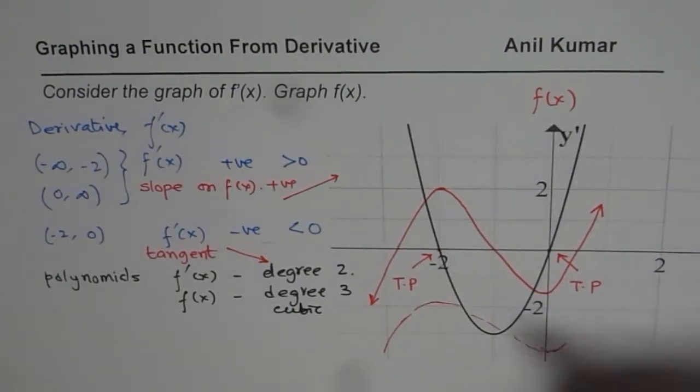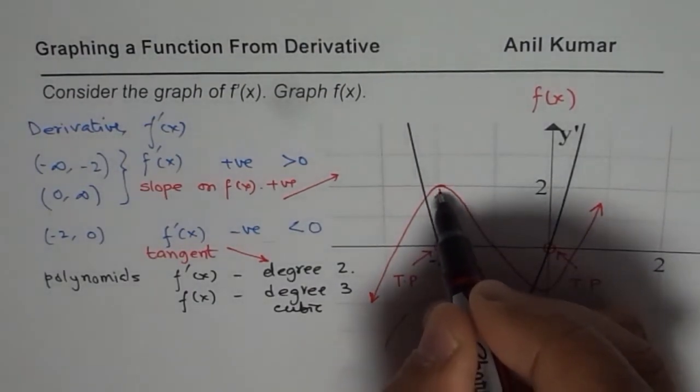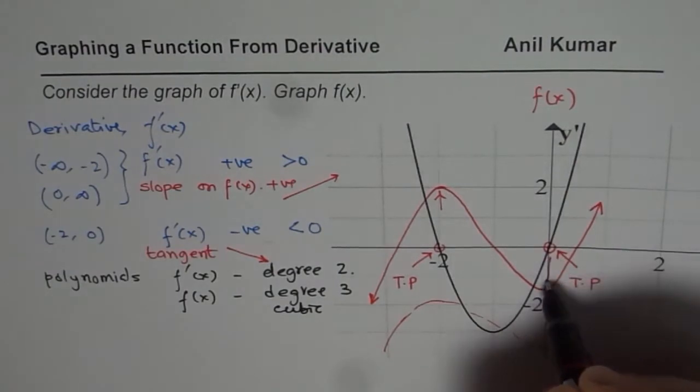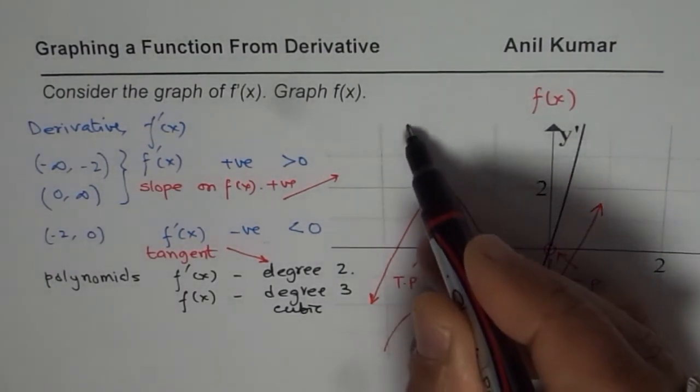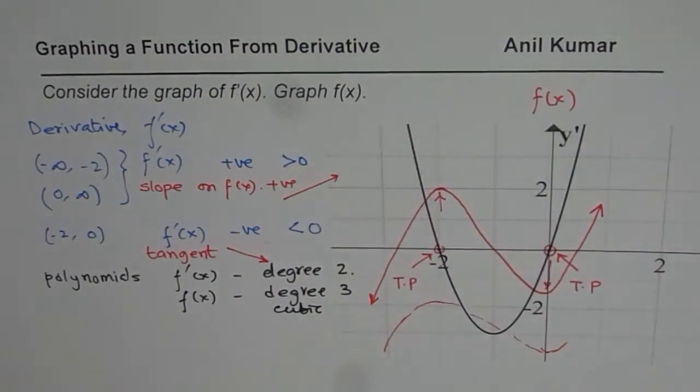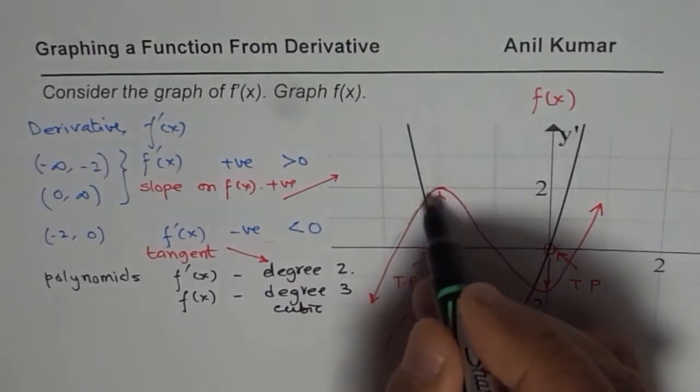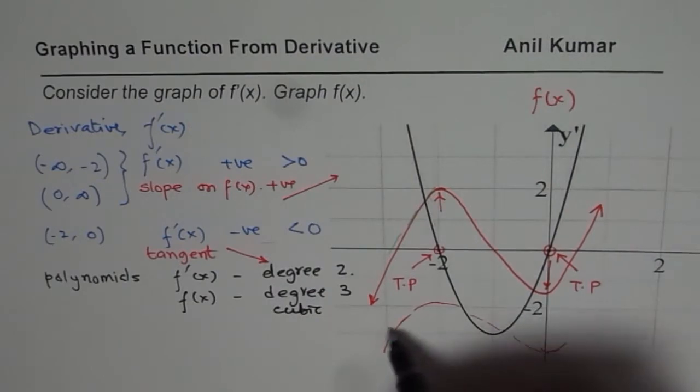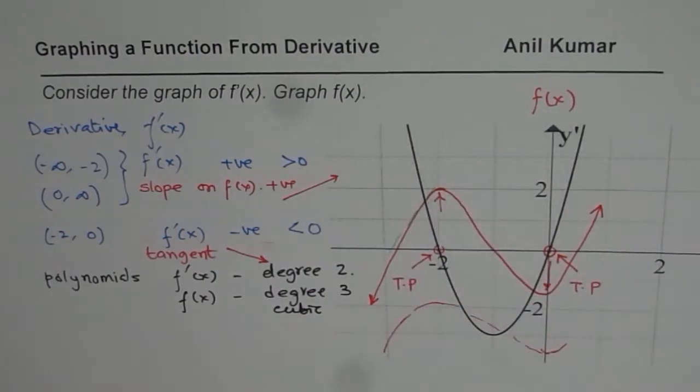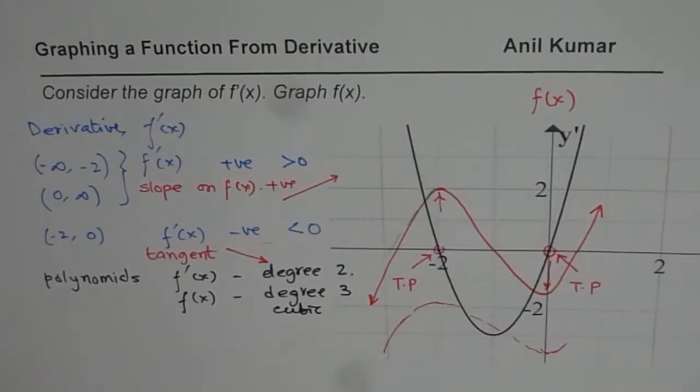So that is the cubic function which we have drawn, which could be the function whose derivative is given to us. The idea here is to match these turning points. If I draw any tangent on the left side of minus 2, it is always positive. On this side, it is negative, and then again positive. This is a graph which fits into the description. If you find the derivative of this graph, it will look like a parabola as shown to you.